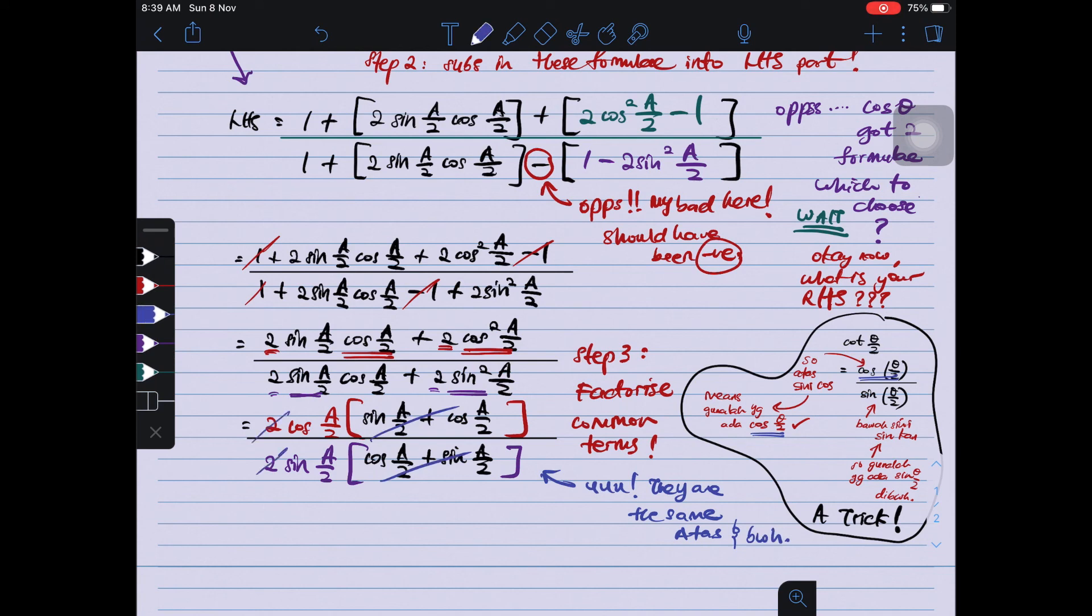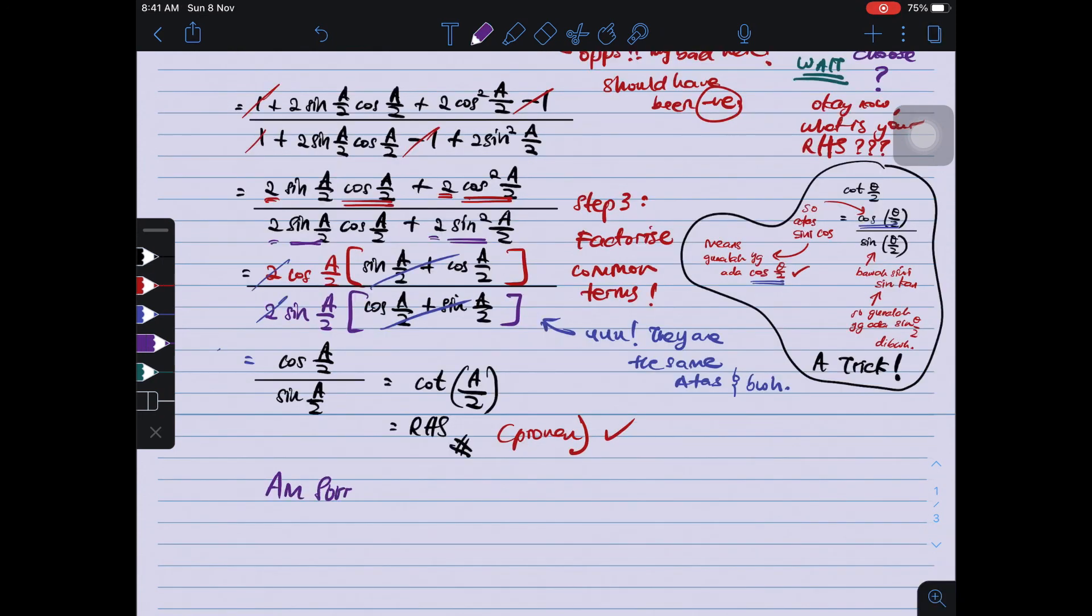Top and bottom, so we can cancel. It goes, it gives us 1, the value 1. Top and bottom are the same. 2 is also the same, 2 divided by 2 is 1. Therefore we get cos A over 2 divided by sine A over 2. And then we got cotangent A over 2, same with right hand side. And then you put proven.